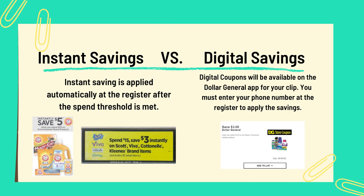Let's talk about the difference between instant savings versus digital savings. Instant savings is applied automatically at the register after the spend threshold is met. Digital savings are digital coupons available on the Dollar General app — you have to clip the coupon, and then when you get to the register you enter in your phone number for those savings to be applied. The digital savings coupon is also a Dollar General store coupon.